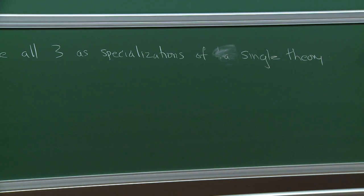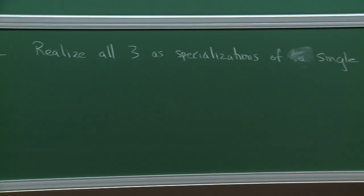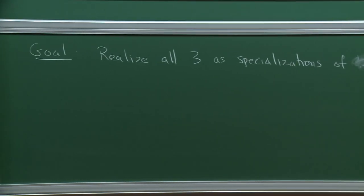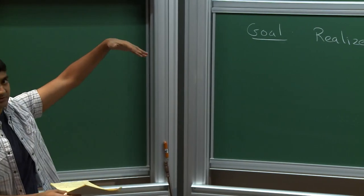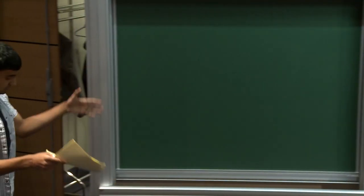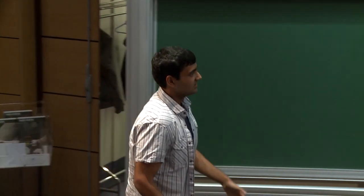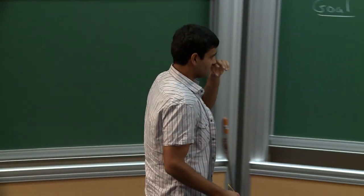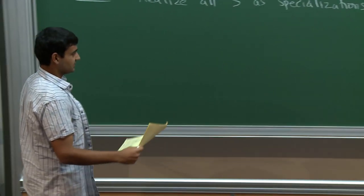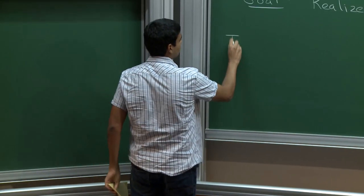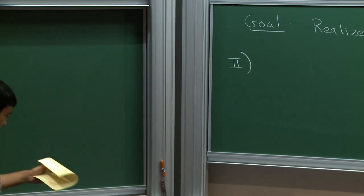The goal for what I want to do today is to try and explain a single picture — a single cohomology theory of which all three of these are specializations. To realize all three as specializations of a single theory, you need something. In each of the previous cases, the ring I was working over was either Z_p, W, or O_C — a dimension-one ring, a valuation ring. If you want something that's going to specialize over two different valuation rings, it needs to be at least two-dimensional.